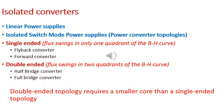Isolated power converter topologies can be classified as either single-ended or double-ended depending on the usage of the BH curve. During operation, if the flux swings in only one quadrant of the BH curve, then the topology is classified as single-ended. If the flux swings in two quadrants of the BH curve, then the topology is classified as double-ended. For a given set of requirements, a double-ended topology requires a smaller core than a single-ended topology and does not need an additional reset winding. Single-ended topologies are more adequate for low power applications, while double-ended ones are good for high power converter circuits.